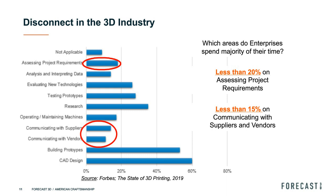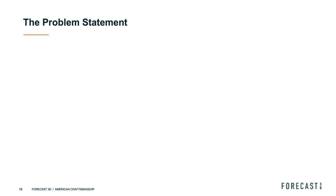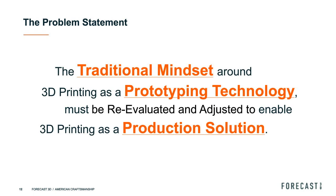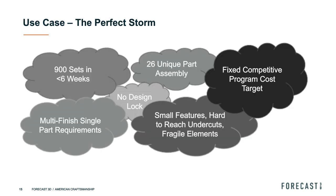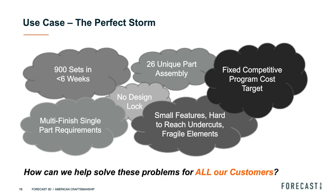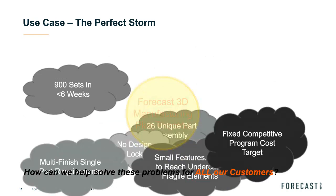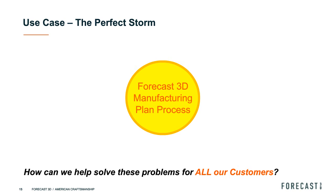The problem statement we identified was: the traditional mindset around 3D printing as a prototype technology — coming from its historical use — must now be re-evaluated and adjusted to enable 3D printing as a production solution. Looking back at our 'perfect storm' use case, we asked: how do we start changing this? How do we put into place something that solves these issues not just for this one customer, but for all our customers? And so was born the Forecast 3D Manufacturing Plan Process.